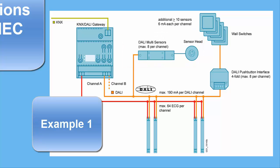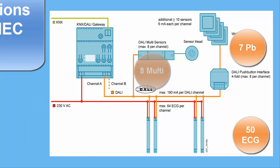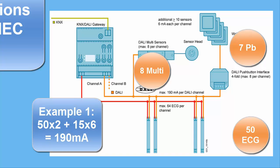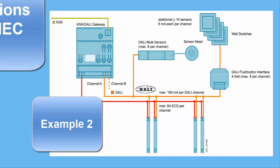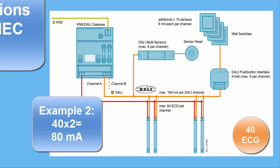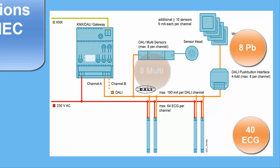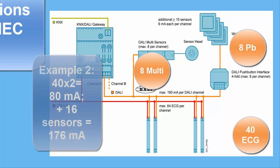Example 1: 50 ECGs have been installed. They use 100mA, so there can be 15 sensors — for example, 7 push-button interfaces and 8 multi-sensors. Example 2: 40 ECGs are on the line. They use 80mA, so 110mA is left for sensors. But you can use only 16 sensors altogether, which use 96mA. There is 14mA left, which could be used for 7 more ECGs.